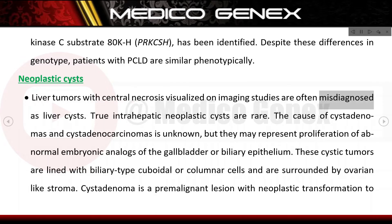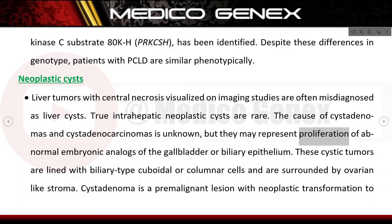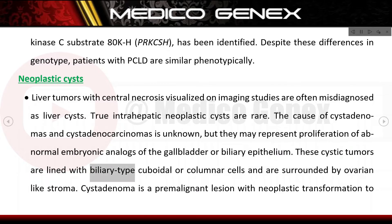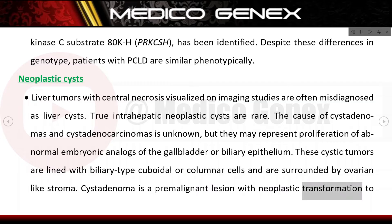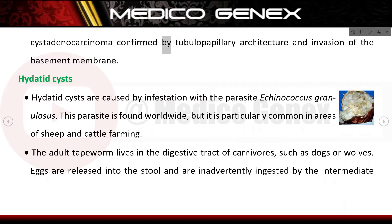Neoplastic cysts: liver tumors with central necrosis visualized on imaging studies are often misdiagnosed as liver cysts. True intrahepatic neoplastic cysts are rare. The cause of cystadenomas and cystadenocarcinomas is unknown, but they may represent proliferation of abnormal embryonic analogs of the gallbladder or biliary epithelium. These cystic tumors are lined with biliary type cuboidal or columnar cells and are surrounded by ovarian-like stroma. Cystadenoma is a premalignant lesion with neoplastic transformation to cystadenocarcinoma, confirmed by tubulopapillary architecture and invasion of the basement membrane.